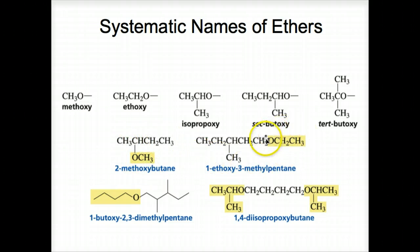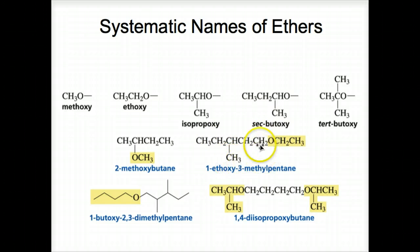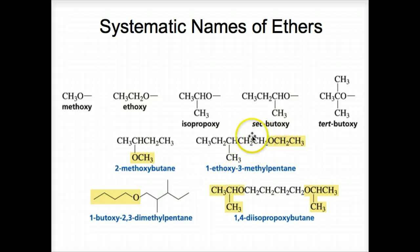Here is an ethoxy group — an ethyl group with an oxygen — so we can name it as a substituent off of the chain. We also have a methyl group substituent. We'll call this number one carbon to get the lowest number, and that must be three, so it's 1-ethoxy-3-methylpentane.